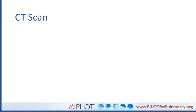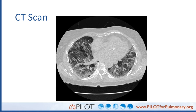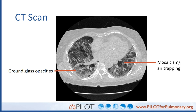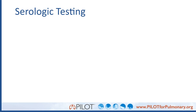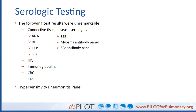We get a CT scan and see a number of findings. As highlighted by the arrows, there is ground glass opacity and mosaicism representing air trapping. All of his connective tissue disease serologies are unremarkable. We also checked HIV, immunoglobulins, CBC, and CMP, which are normal. Notably, his hypersensitivity pneumonitis panel comes back positive with two antibodies.